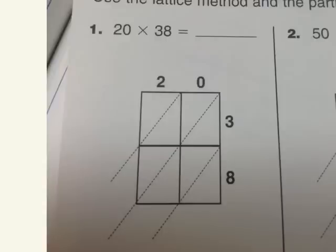So we have 20 times 38 using the lattice method. First of all we will go three times zero, then we'll go three times two. So three times zero is zero, three times two is six. Be sure to write six on the right side not the left side. Then we go down to the bottom, we're going to go eight times zero and eight times two. Again, eight times zero is zero.